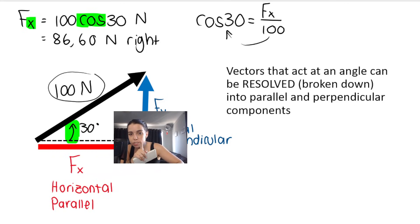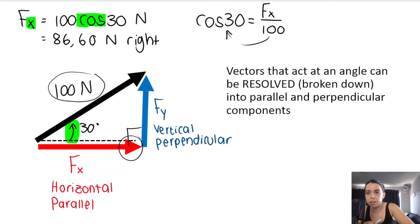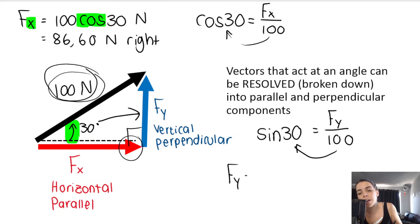Opposite the 30 is fy. Which trig ratio uses opposite and hypotenuse? Sin or sine. So sin 30 equals your opposite, which is fy, over your hypotenuse, which is 100. Take the 100 over. So fy equals 100 sin 30. And again, you can work that out. You get 50 Newtons up.